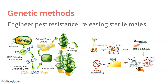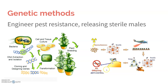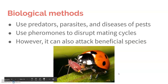Another genetic technique is releasing sterile males. They take very young larvae and apply gamma radiation to make them sterile. When released into the wild population, the wild individuals attempt to mate with the sterile males and produce no offspring, so the population decreases over time. Biological methods can also include predators, parasites, and diseases of the pest, or using pheromones to disrupt mating cycles so they don't mate in the first place.